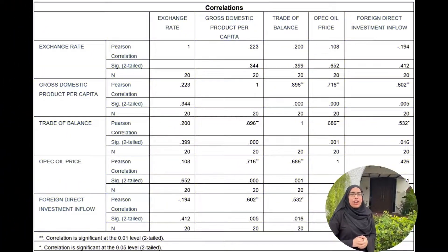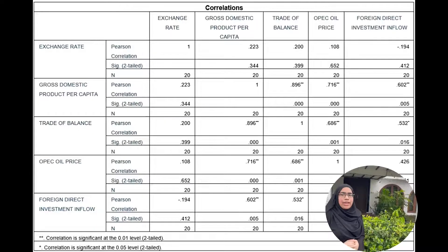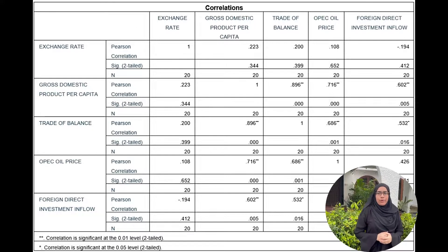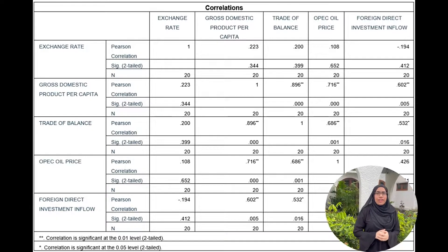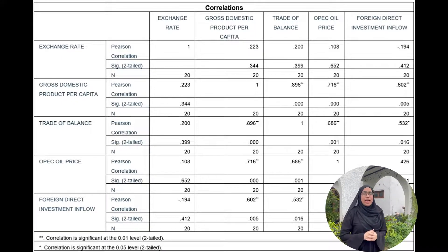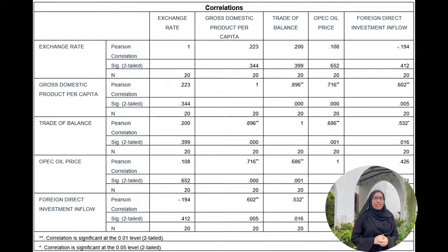For the correlation analysis: the exchange rate has a moderate positive relationship with GDP per capita and trade balance, a weak positive relationship with OPEC oil price, and a weak negative relationship with foreign direct investment. GDP per capita has a strong positive relationship with trade balance, OPEC oil price, and FDI inflow. Trade balance has a strong positive relationship with OPEC oil price and FDI. OPEC oil price has a strong positive relationship with foreign direct investment.